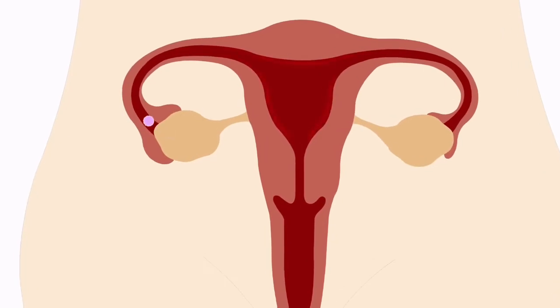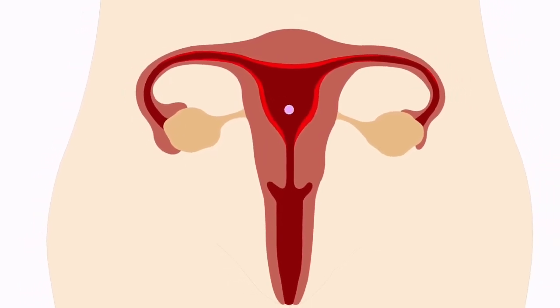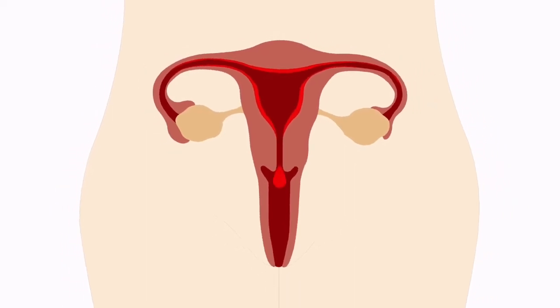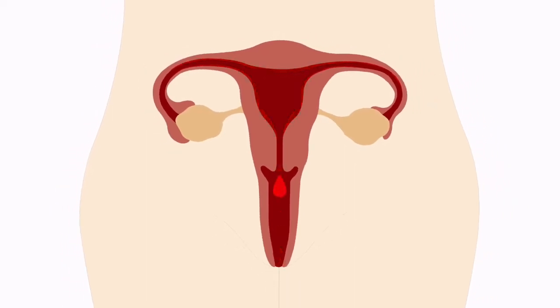The endometrial tissue that lines the inner walls of the uterus is called endometrium. It grows in the follicular phase of each menstrual cycle under the action of reproductive hormone estrogen to support the implantation of the fertilized egg and to support the growth of the fetus. However, if pregnancy doesn't occur, this endometrium breaks down and sheds under the action of changing hormones with your menstrual cycle, and it comes out as menstrual flow during normal menstruation.